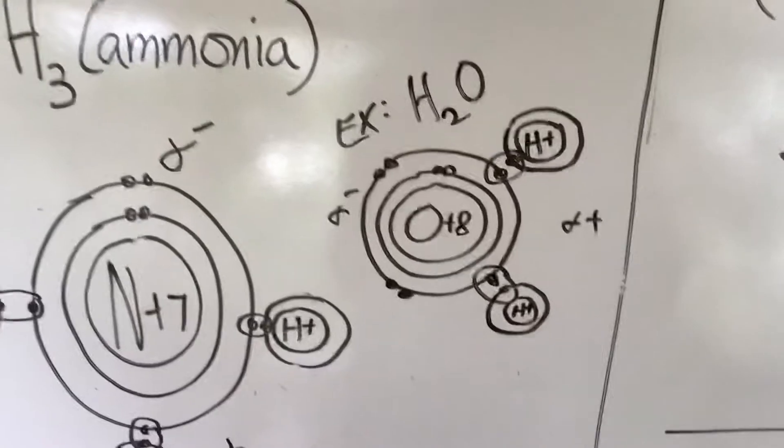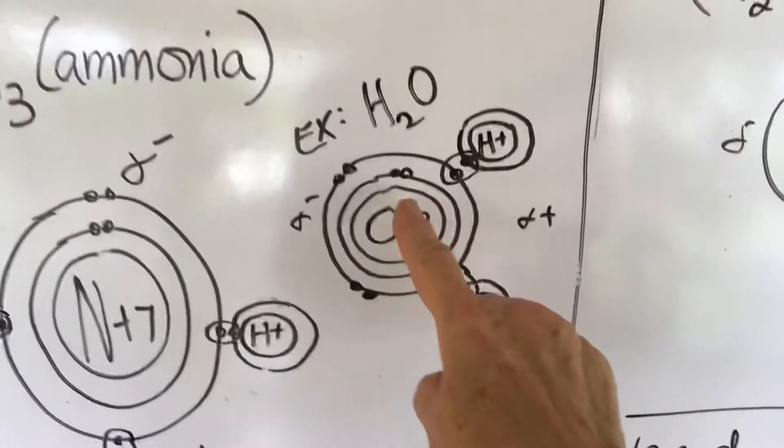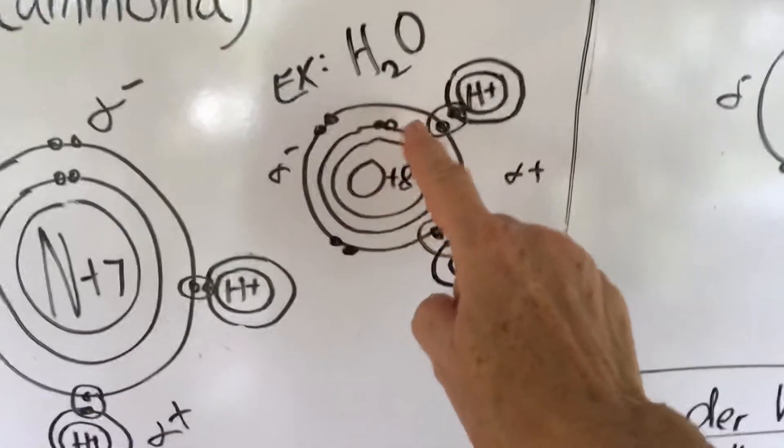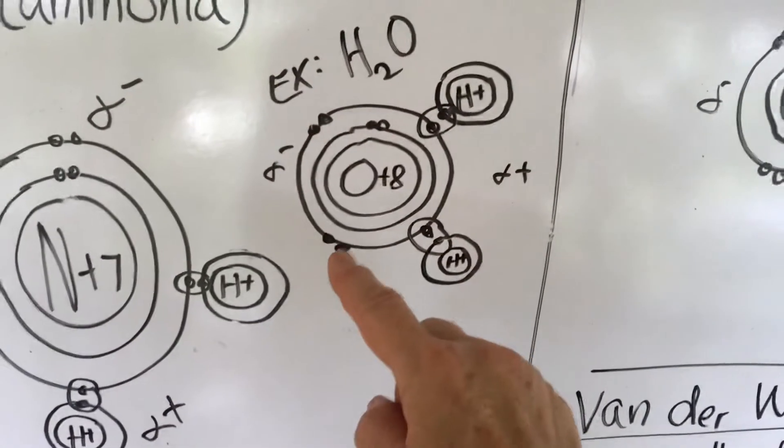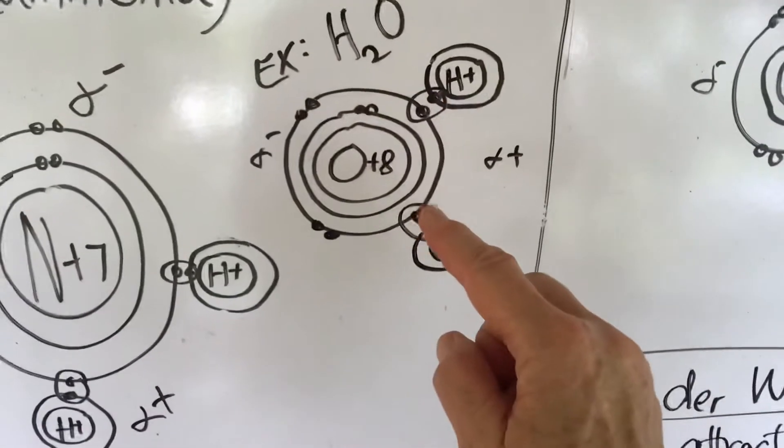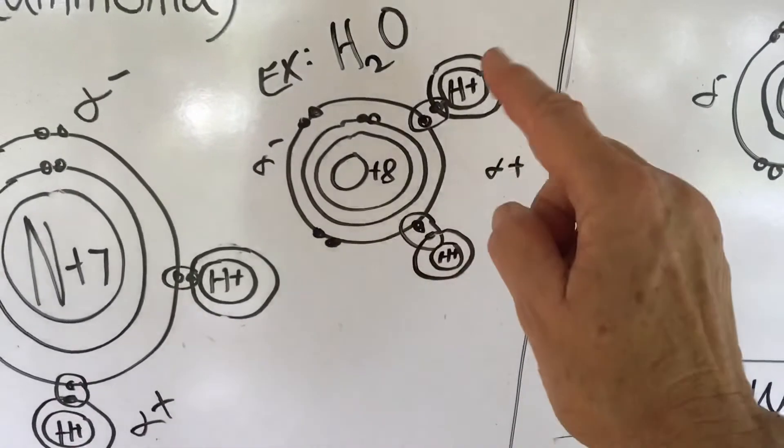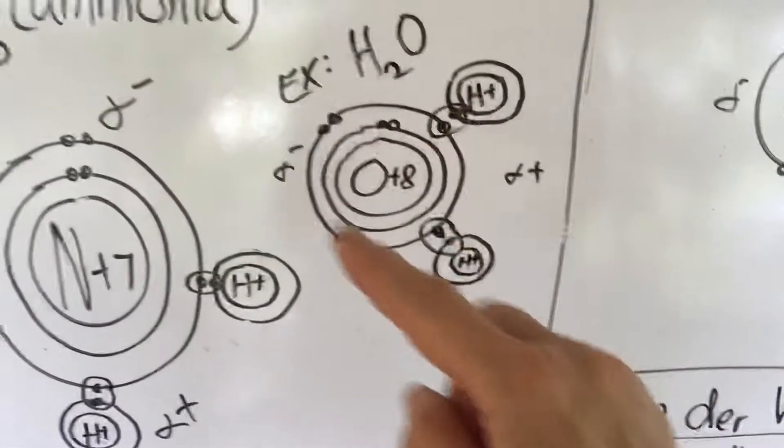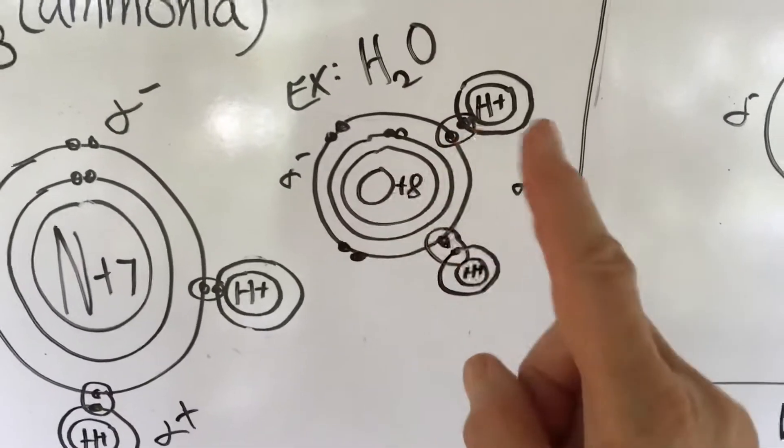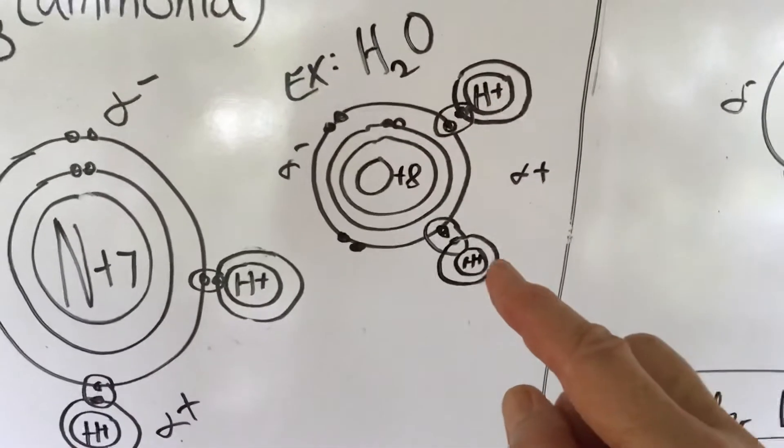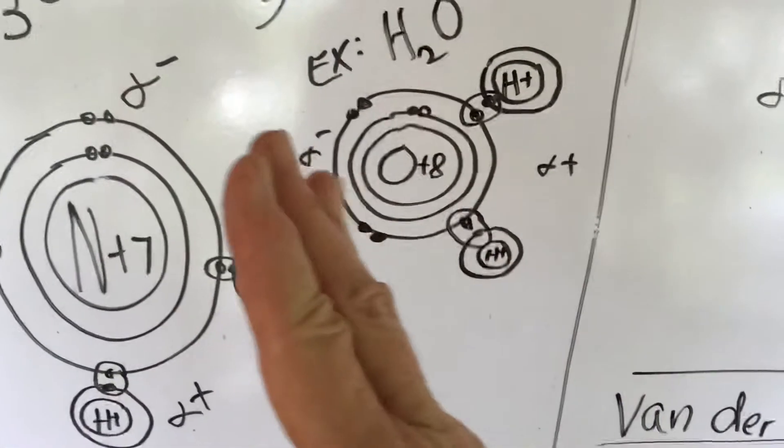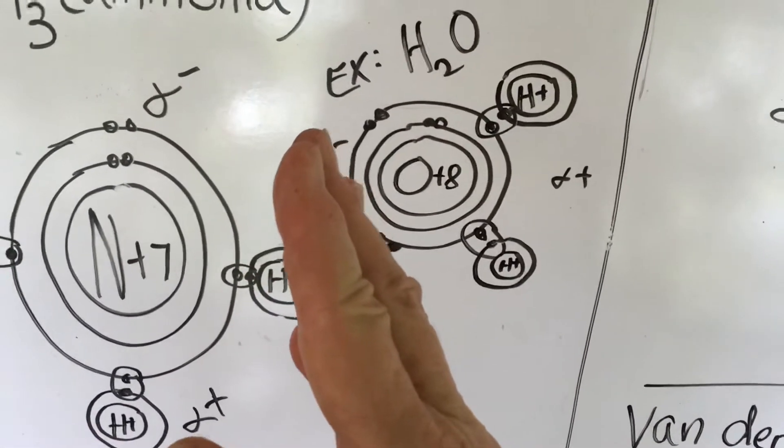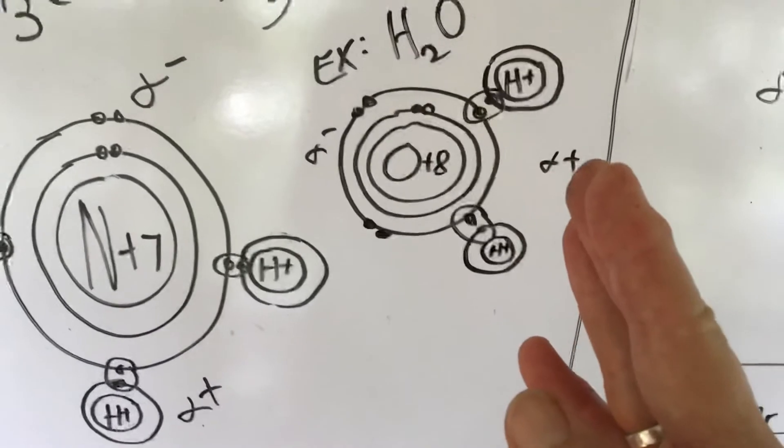We have oxygen. Remember, oxygen has two electrons in the first energy level, and then it's going to have six in the next shell, two that are paired and two that are unpaired. These valents will join with the hydrogens in a regular covalent bond, but because oxygen is so much larger than the two hydrogens, what's going to happen is this is slightly negatively charged over here because the electrons spend more time on this side than they do on this side.